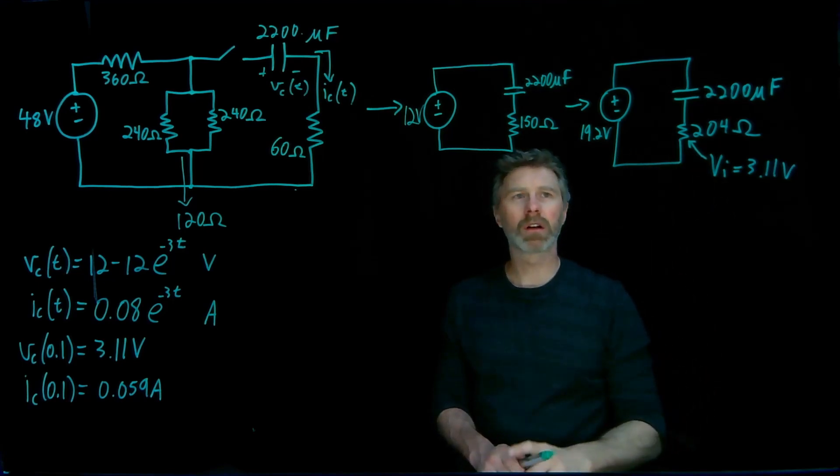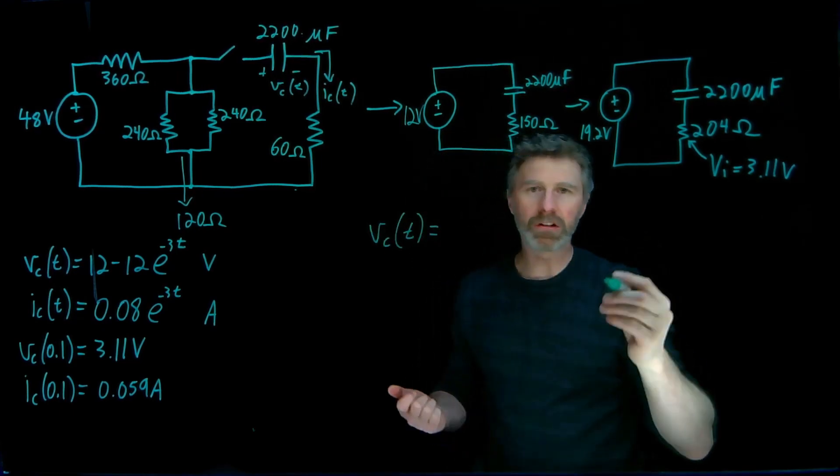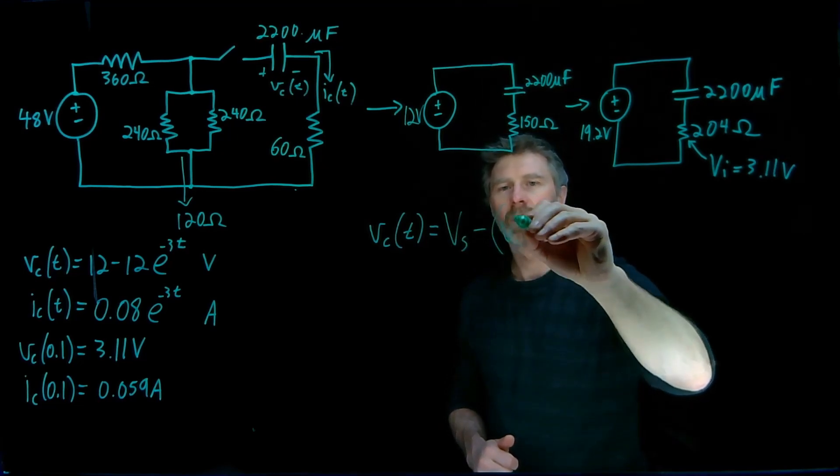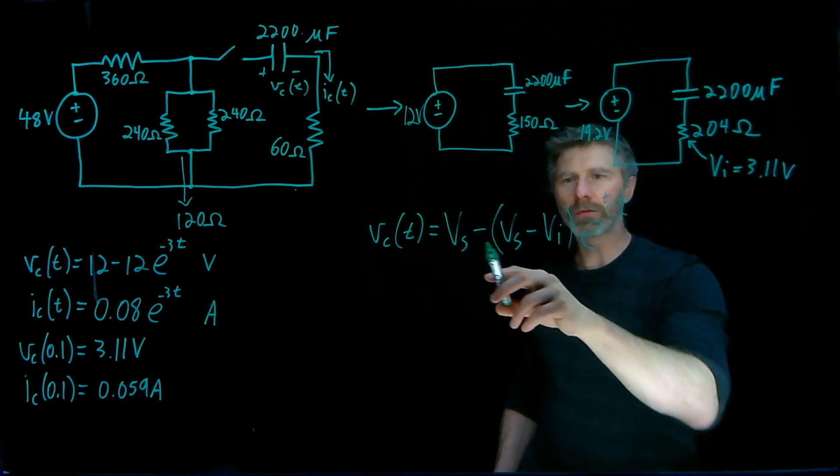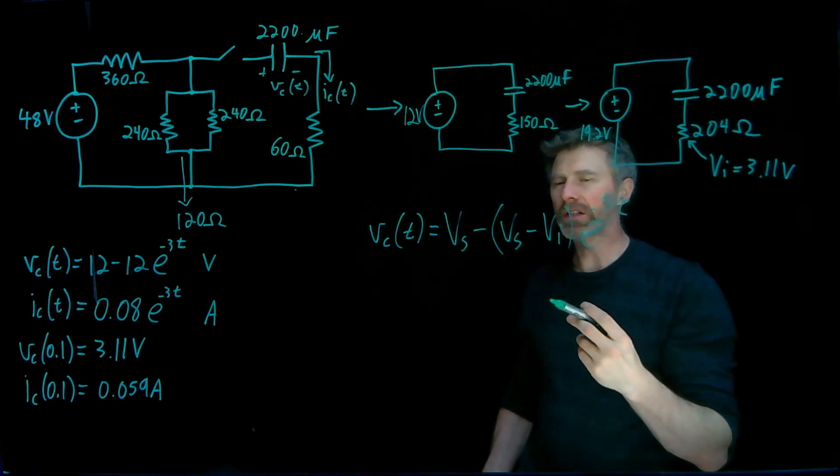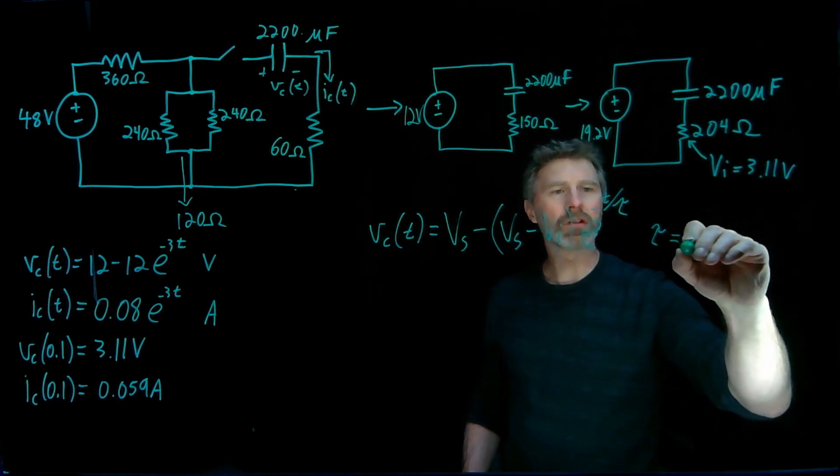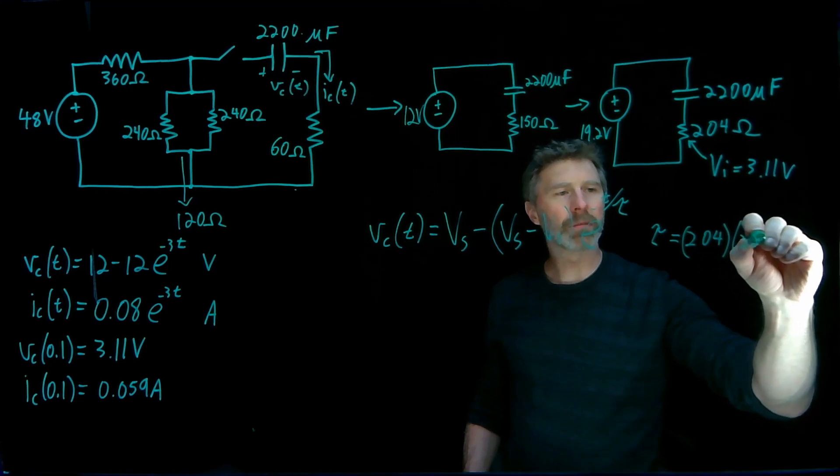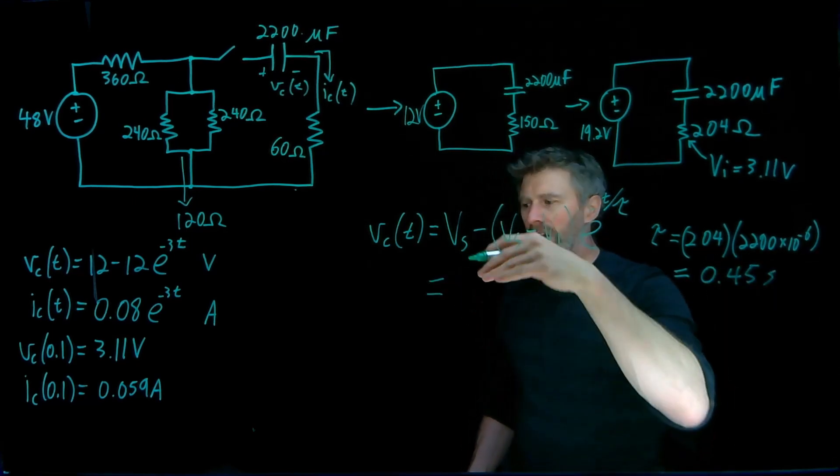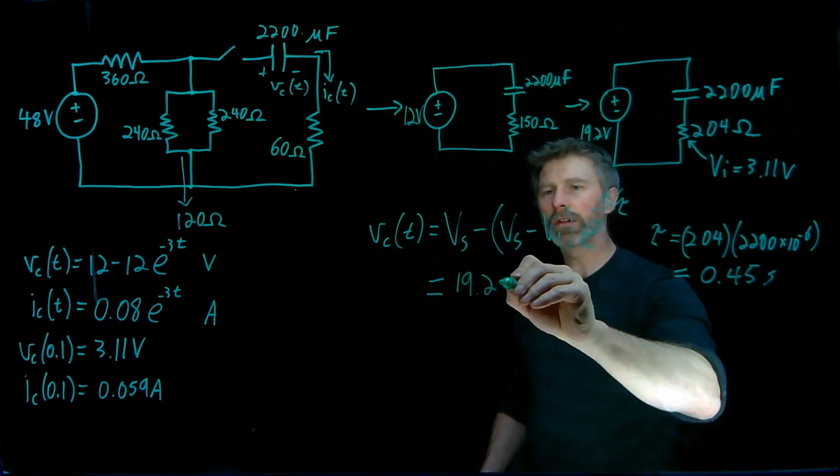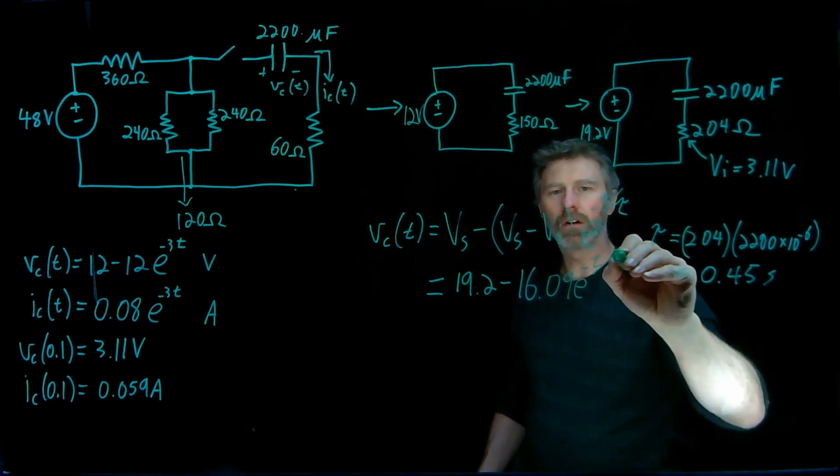Well, now again we have a charging capacitor circuit with an initial voltage this time. So our new voltage equation, in general the voltage equation is Vs minus Vs minus the initial voltage times e to the negative t over tau. Now we need to figure out what these values are. Well, this would be 19.2. And then we'll have 19.2 minus 3.11, which gives us 16.09. And we also need to know what tau is. Well, tau is R times C. So this will be 204 ohms times 2200 microfarads. And our new tau is 0.45 seconds. So rewriting this equation, filling in the numbers, we get 19.2 minus 16.09 e to the negative t over 0.45.